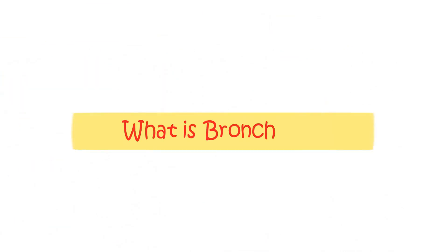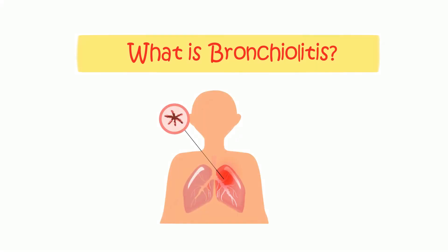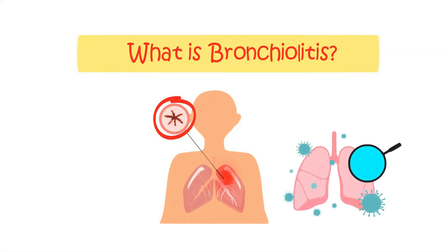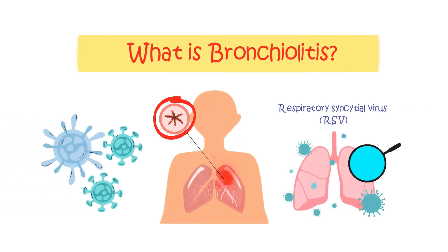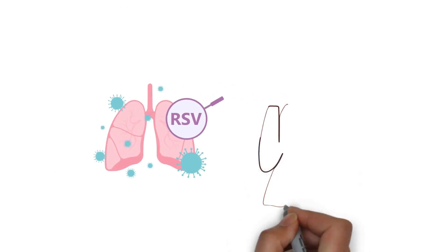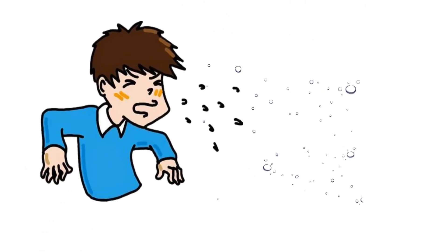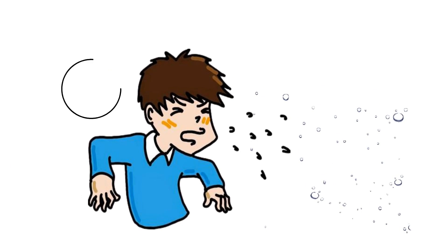The thin walls of the alveoli allow oxygen from the inhaled air to pass into the bloodstream, ensuring oxygenation of the body's tissues. Bronchiolitis is characterized by inflammation of the bronchioles. The primary cause of this condition is often a virus called respiratory syncytial virus, RSV, although other viruses can also be responsible. RSV is a common viral infection associated with cold-like symptoms, and the virus spreads through tiny water droplets that are coughed or sneezed into the air. Infected bronchioles become swollen and filled with mucus.